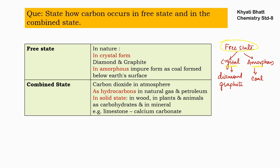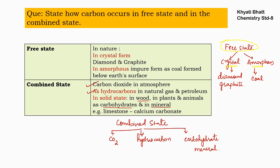In combined state, carbon occurs in three different ways. In the atmosphere, it is present as carbon dioxide. It is also present in the form of hydrocarbons in natural gas and petroleum. Additionally, it is present in plants, animals, and wood in the form of carbohydrates and minerals.